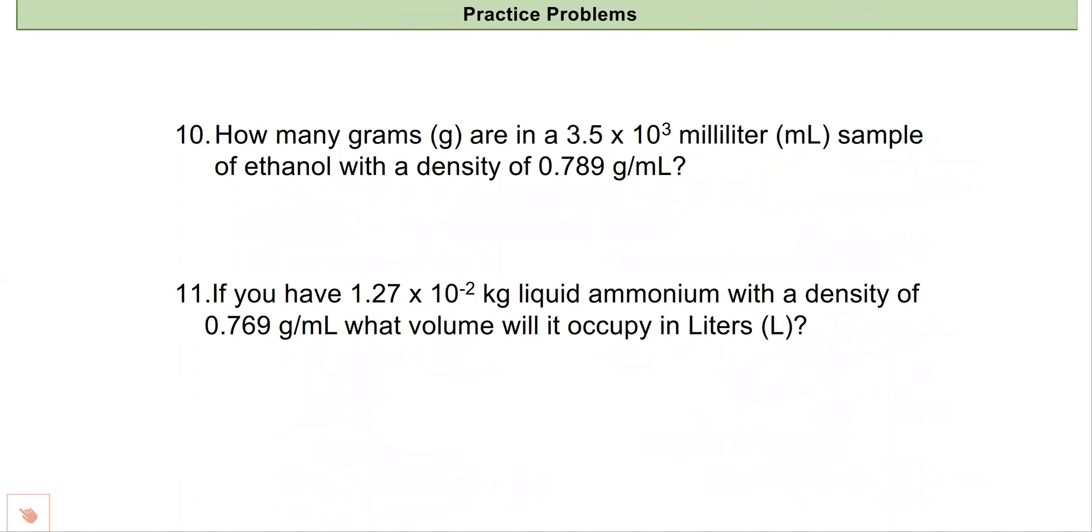In our first one, we are starting with 3.5 times 10 to the third milliliters. We're given a density for our ethanol, which is very similar to methanol. So I'm going to set this up with my starting point as 3.5 times 10 to the third milliliters. Now I'm going to use my dimensional analysis technique. I want to have units of grams. I want my milliliters to cancel out, so I'll put milliliters on the bottom and grams on top. And that means I just need to plug in my density: 0.789 divided by one milliliter.